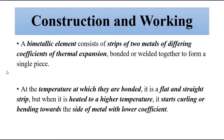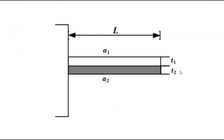This bi-metallic element is a very widely used temperature sensor which is used in industrial applications. This bi-metallic strip consists of two different metals of varying thickness that are joined together, and they have different coefficients of thermal expansion.